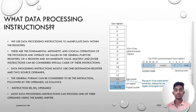We use data processing instructions to manipulate data within the registers. These are the fundamental arithmetic and logical operations of the processor and operate on values in the general purpose registers. Multiply and divide instructions can be considered special cases of these instructions. Data processing instructions mostly use one destination register and two source operands. The general format is: instruction RD, RN, Operand2. Most data processing instructions can process one of their operands using the barrel shifter. On the right side we can see the image which shows the user registers.